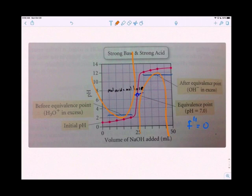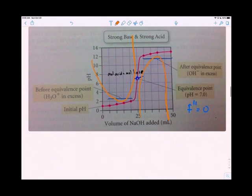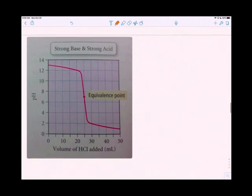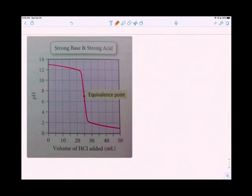Here's a strong base and a strong acid, so it's really just the opposite. You start off at a really high pH and go to a really low pH. You have a concavity going up and the same equivalency point at 7 where the second derivative hits zero.